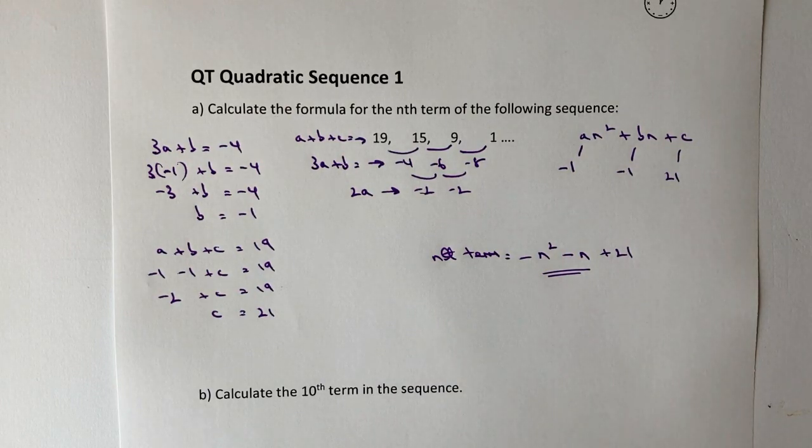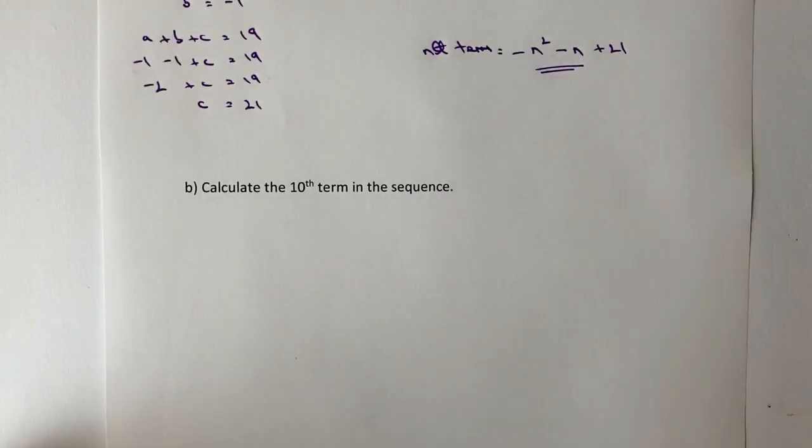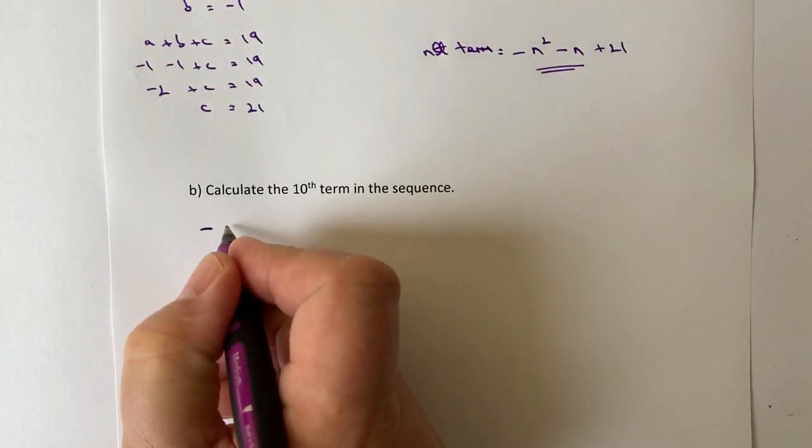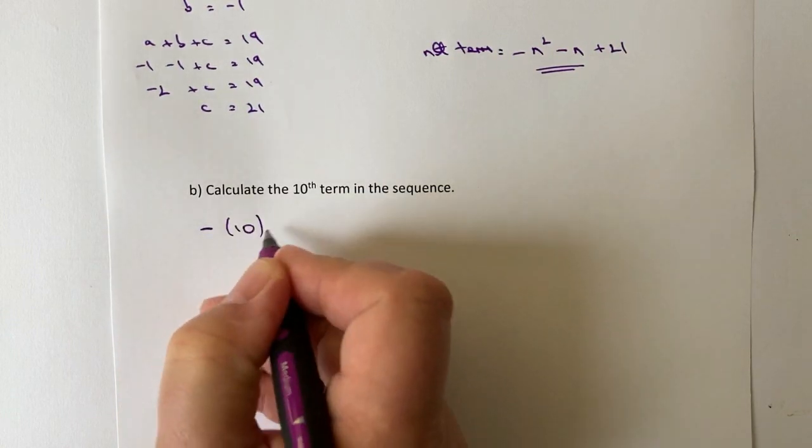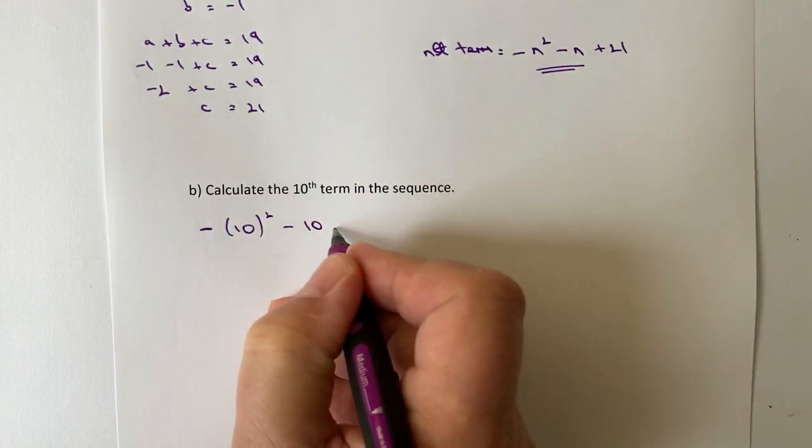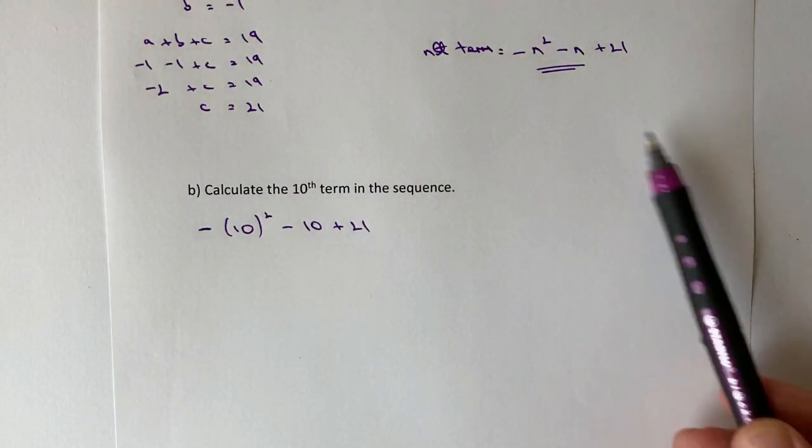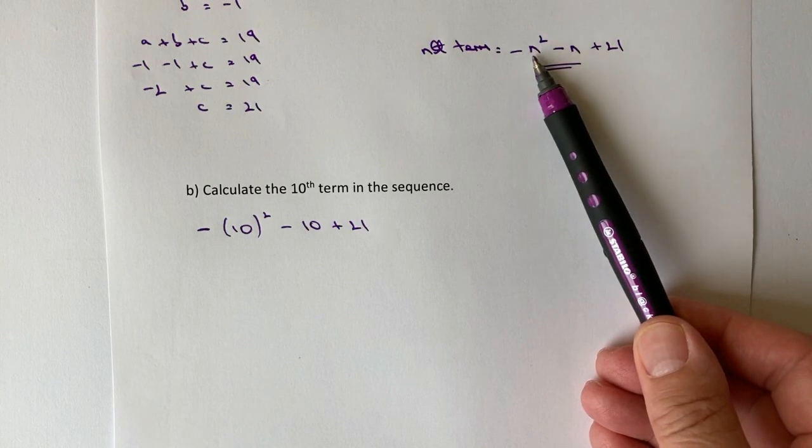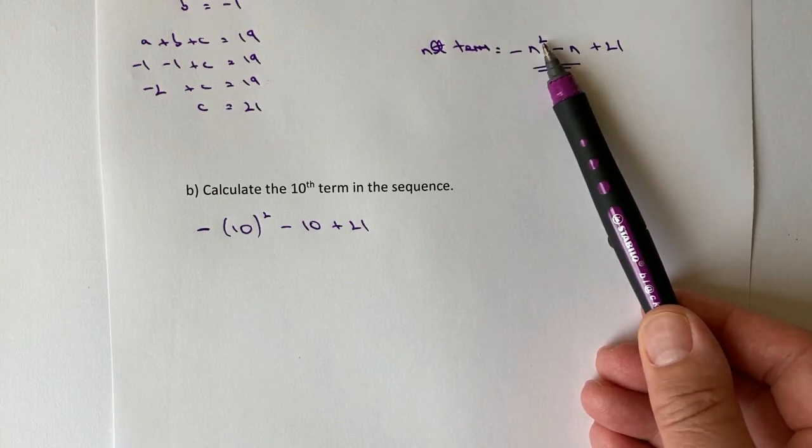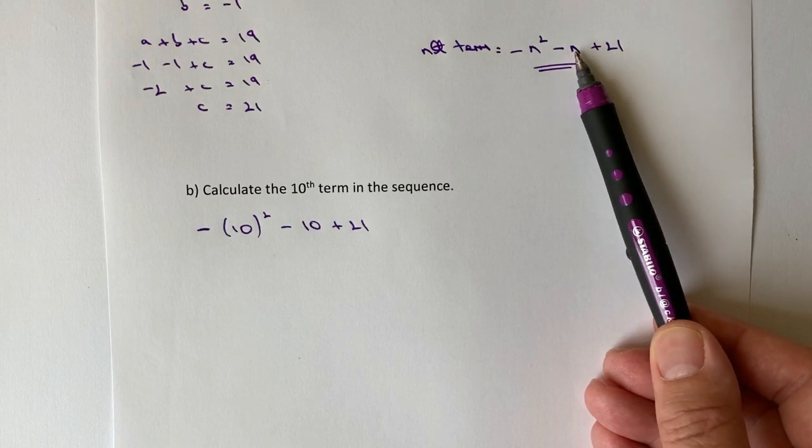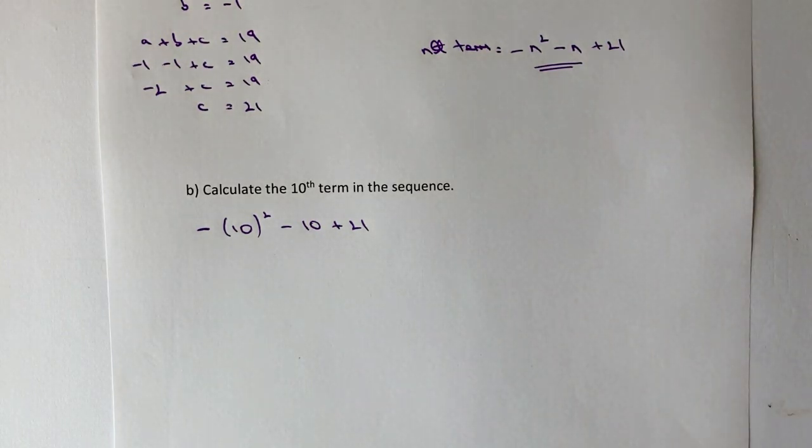The second part of this particular question is calculate the 10th term of this sequence. Now, we've got to be a little bit careful here, because the 10th term means I'm going to replace the n with 10. So I get that, because what I'm saying is, is that rather than writing n squared, I'm going to write 10 squared. And then rather than writing minus n, I'm going to write minus 10, and then plus 21.